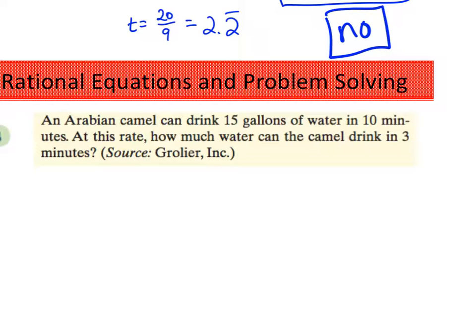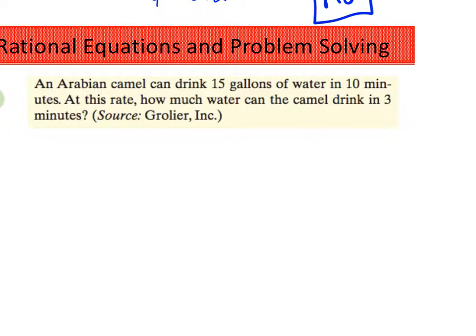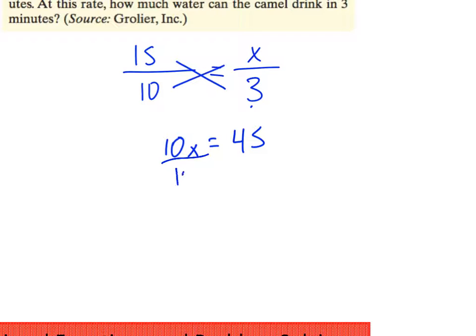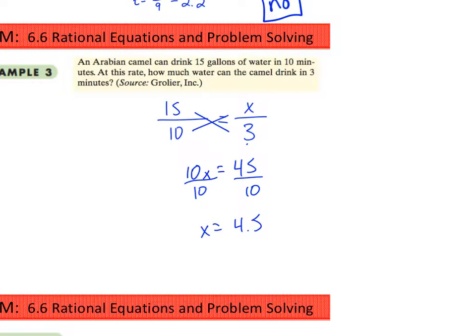Anyway, an Arabian camel can drink 15 gallons of water in 10 minutes. At this rate, how much water can the camel drink in 3 minutes? Well, that's just a simple proportion. So 15 gallons in 10 minutes. At that rate, they can drink X number of gallons in 3 minutes. Just set up a proportion there. 10 times X, cross multiply, 10 times X equals the product of the other crossing. 3 times 15 is 45. Divide by 10, 4.5. So 4.5 gallons of water in 3 minutes. That's pretty remarkable.